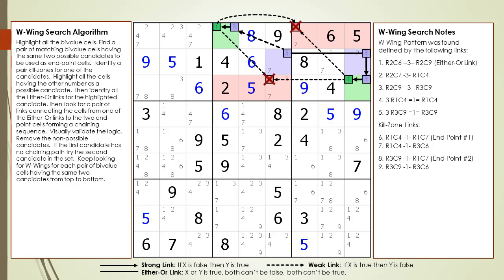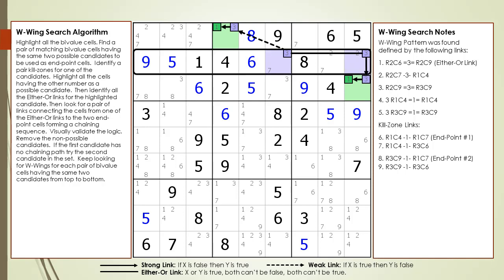In all four cases, the target candidates in the kill zones are killed, so they are non-possible candidates and can be removed from the puzzle. We remove the non-possible candidates from the puzzle. Notice how the either-or link for this W-Wing occurs within the house making up row 2. When a W-Wing's either-or link occurs within a row, the W-Wing is labeled as having a row-wise orientation.